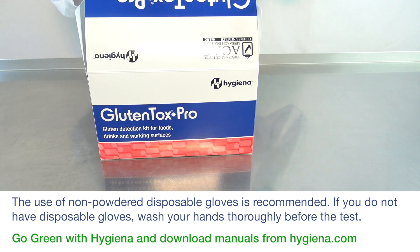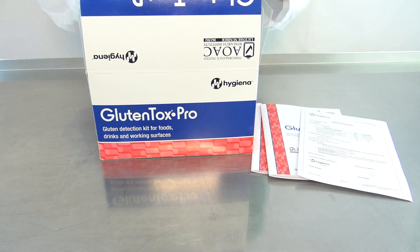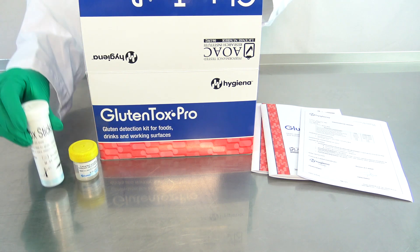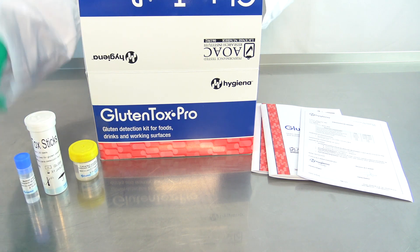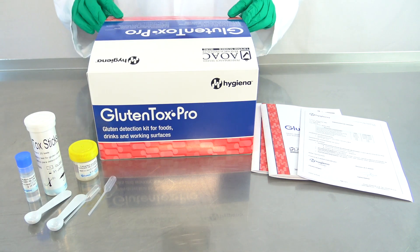When opening the box, you will find manuals, a quality certificate, extraction solution with a yellow cap, gluten test sticks, dilution solution with a blue cap, disposable spoons, and plastic pipettes.